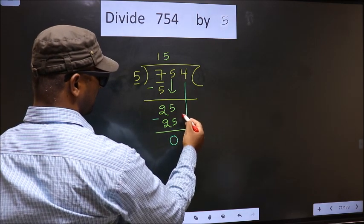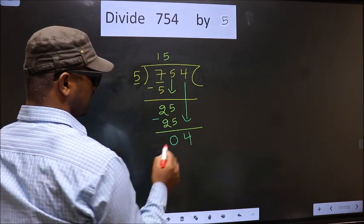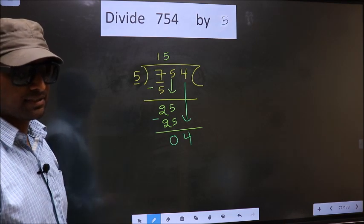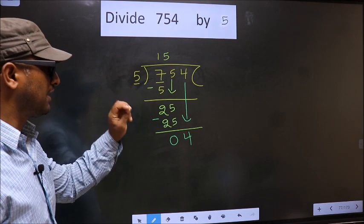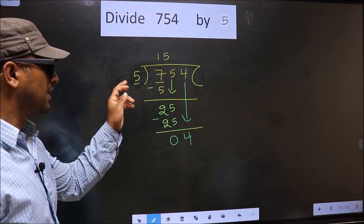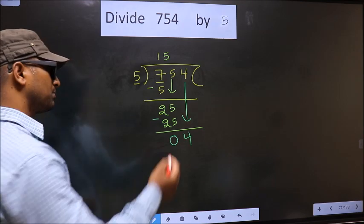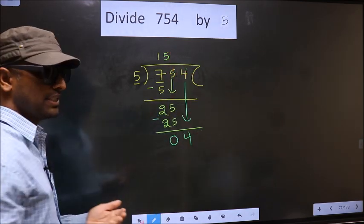Now you bring down the beside number. So 4 down. This is where the mistake happens. And the mistake is this. Here we have 4. Here 5. 4 is smaller than 5. So what many do is they put a dot and take 0 here which is wrong.